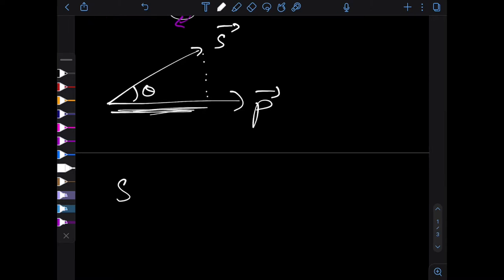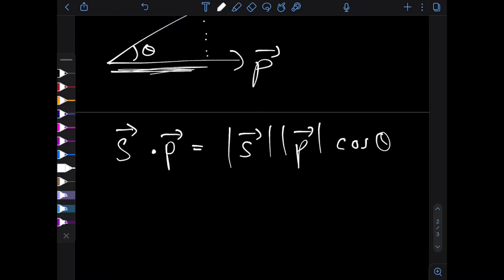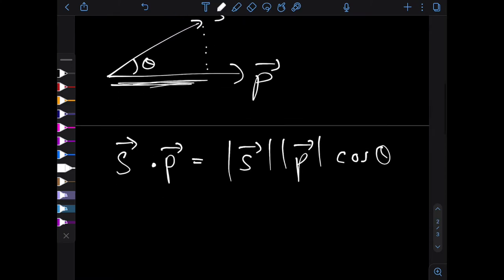So s dot product with p is simply the length of s, so its modulus, times the length of p times the cosine of the angle between them. And this is a really cool quantity—it tells us how much of a shadow s casts on p.